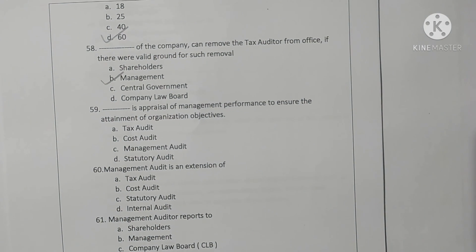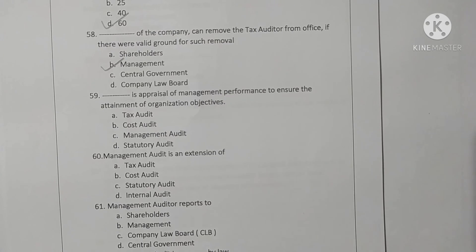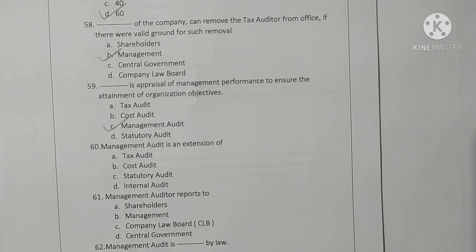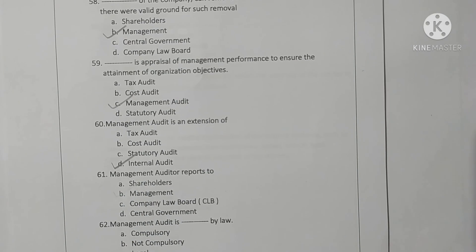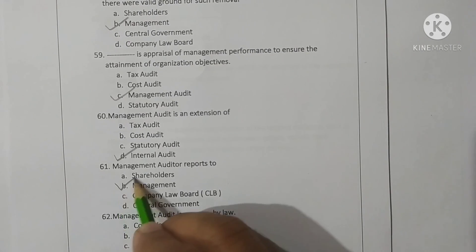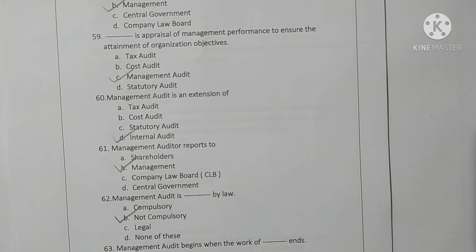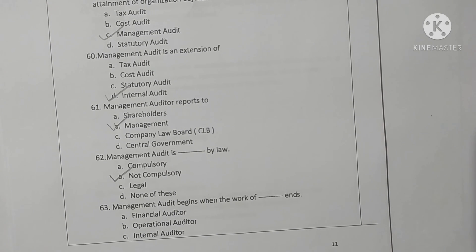Management audit is an appraisal of management performance to ensure the attainment of organizational objectives — option C is correct. Management audit is an extension of internal audit — option D is correct. Question 61: Management auditor reports to the management — option B is correct. Management audit is not compulsory by law — option B is correct. Management audit begins where the financial auditor ends — option A is correct.